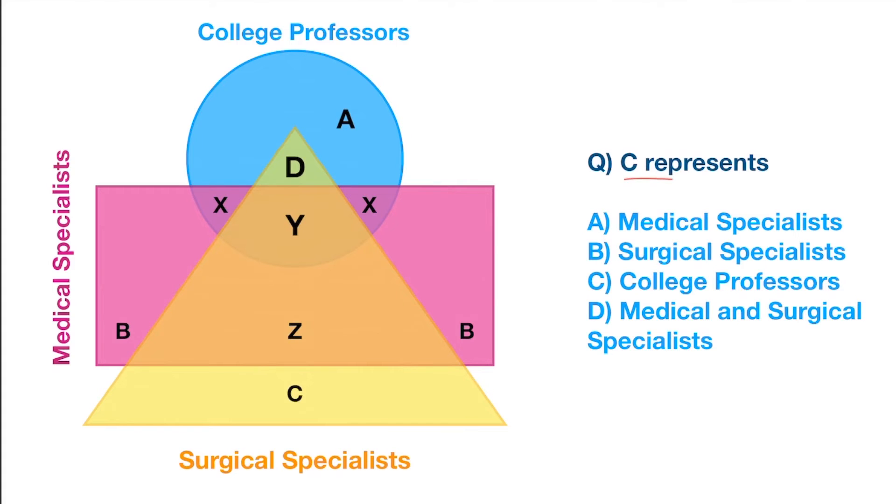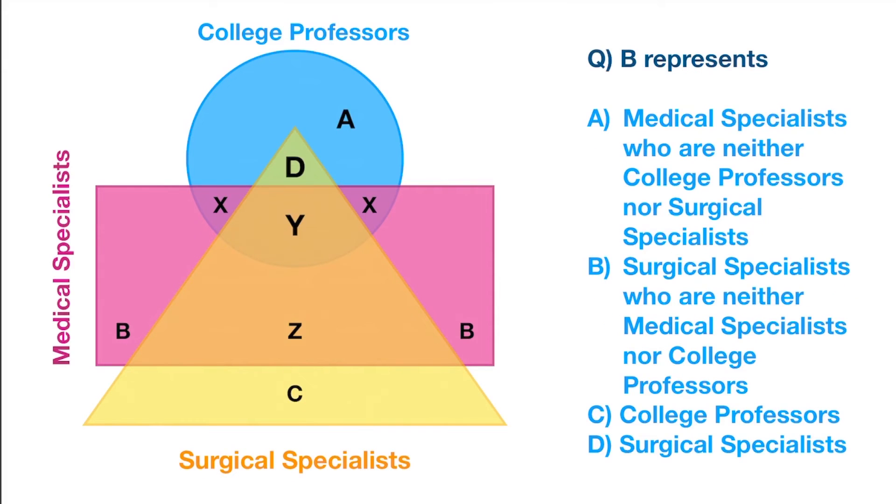Look at the third question. C represents what? And it is pretty clear. C represents surgical specialists. Therefore option B. And the last question. B represents what? B is this part. If the B is this part, which is medical specialists, which excludes college professors and even surgical specialists. Therefore option A. That's it for logical Venn diagrams. Practice well.